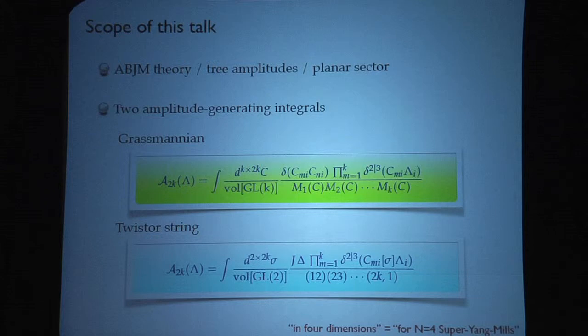I'm going to pick the close cousin of N=4 super Yang-Mills in three dimensions, which is the ABJM theory. Most of my talk will focus on tree amplitudes in the planar sector. The two main actors are these amplitude-generating integrals: one is called the Grassmannian and one is called the Twistor String Integral. I'll explain what they are, how they are related, and what they are good for. Both have their elder cousins in four dimensions and I'll make comparisons as I go along.